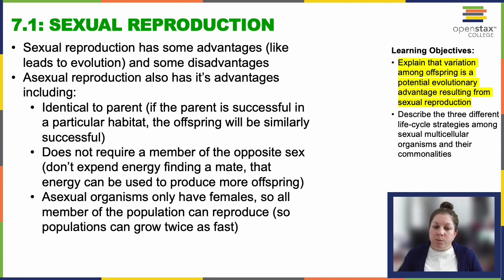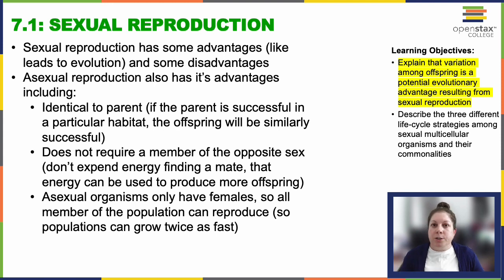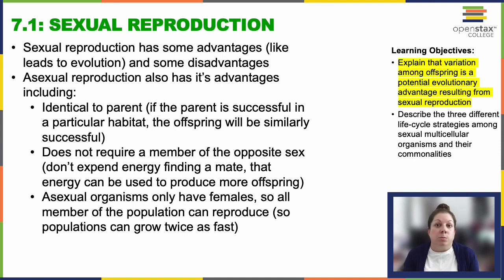Whereas sexually reproducing organisms draw traits from both parents to create unique genomes. Each individual in a sexually reproducing population, except for twins, is going to be a little different, even from their closest relatives. So how do we produce these unique genomes? Meiosis is the answer. Meiosis divides the nuclear content and distributes chromosomes among the gametes, enhancing variation through some really cool steps.